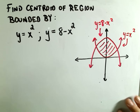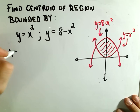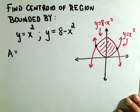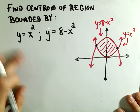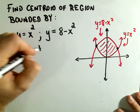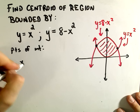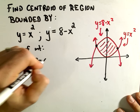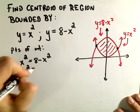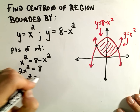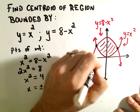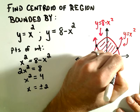The first thing we'll do is find the area, but before that we need to find the points of intersection to get our limits of integration. To find the points of intersection, we set x squared equal to 8 minus x squared and solve. We add x squared to both sides to get 2x squared equals 8, divide by 2 to get x squared equals 4, take the square root of both sides, and we get positive and negative 2 as the points of intersection.